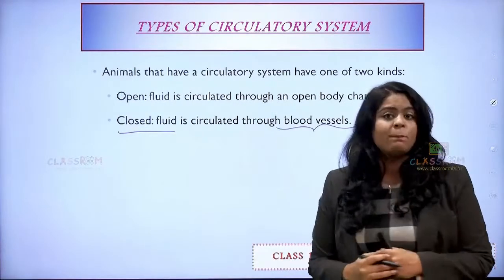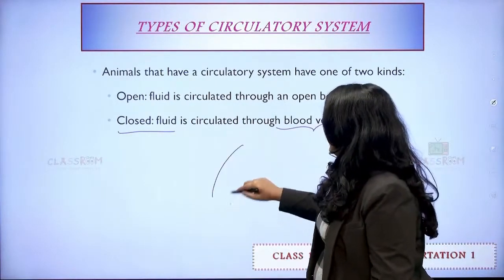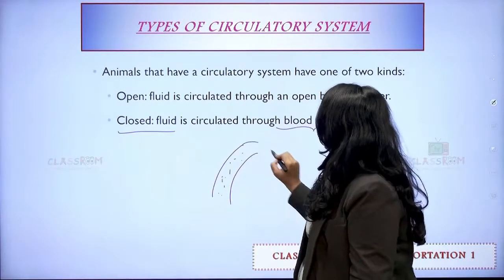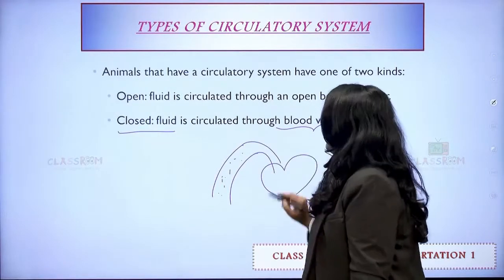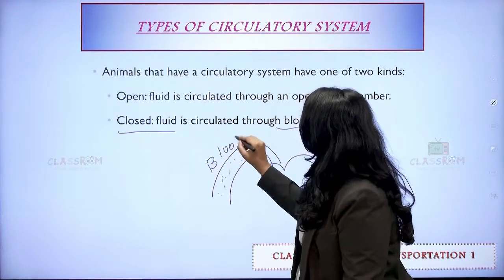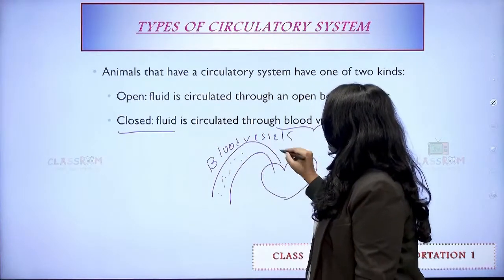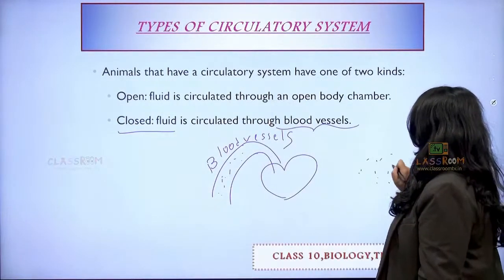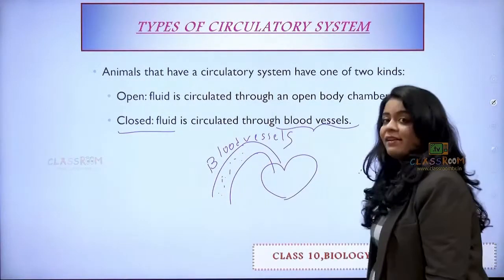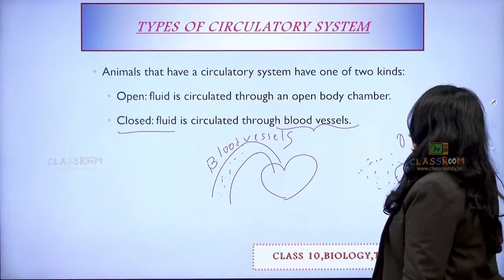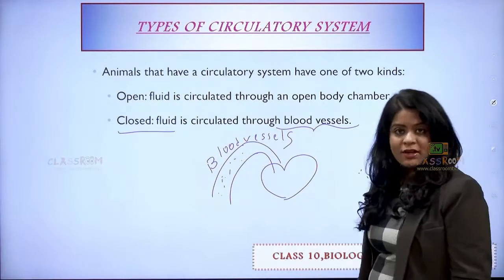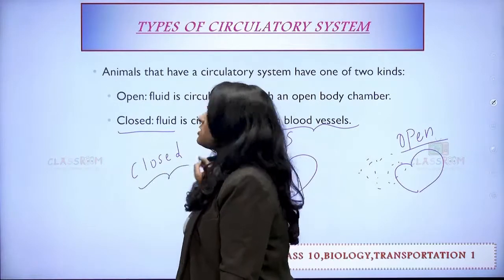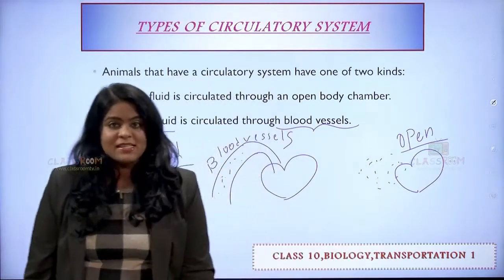What I mean is: suppose this is blood. If blood has to reach the heart, it only happens with the help of blood vessels. If blood vessels don't exist, the blood would just flow everywhere — that type of circulatory system is called the open type, whereas when blood vessels are present it is called the closed type of circulatory system.